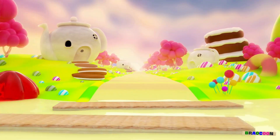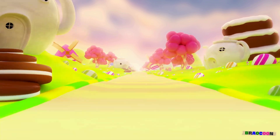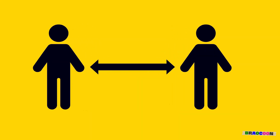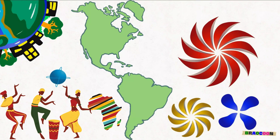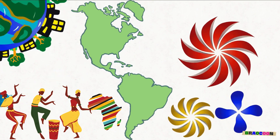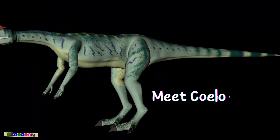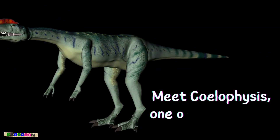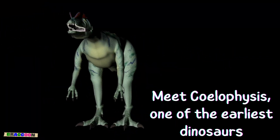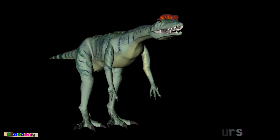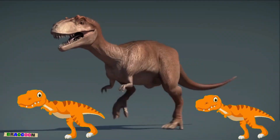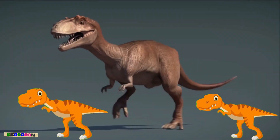But over millions of years, this big land started breaking apart and moving away from each other, forming the continents we know today, like North America, Africa, and others. Meet Coelophysis, one of the earliest dinosaurs — it was a fast and fierce predator that walked on two legs.